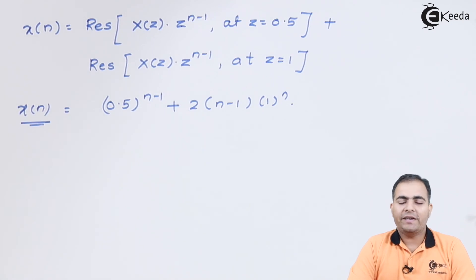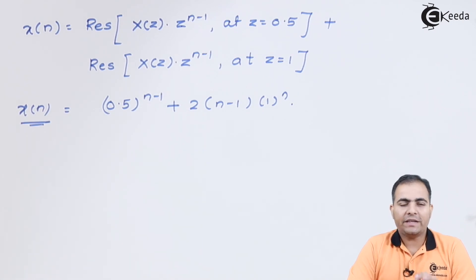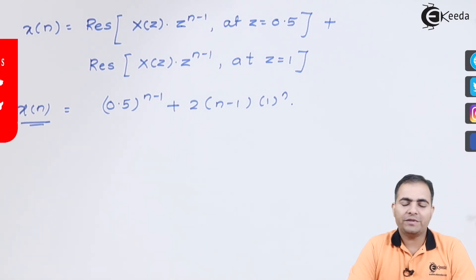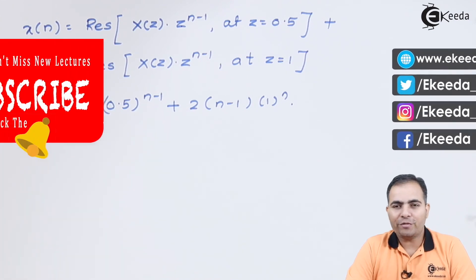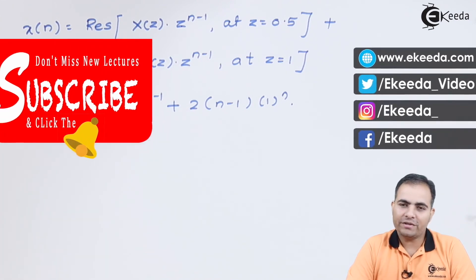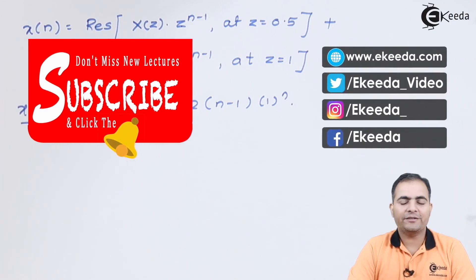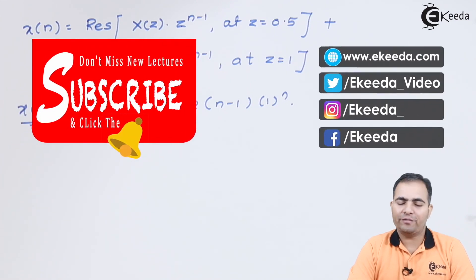This is all about the residue theorem. What you have to do: first, multiply both sides by Z to the power n minus 1, then multiply by the required pole value to calculate the residue. This is our result — you now understand the concept of how to use the residue theorem. Thank you for watching. Stay tuned to Ikeda and subscribe for more videos.